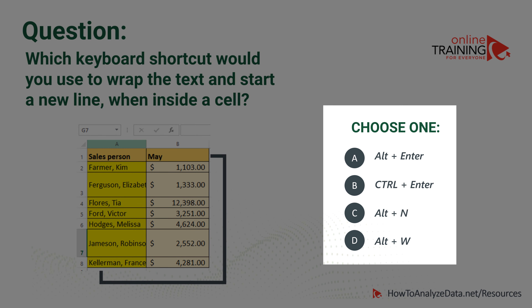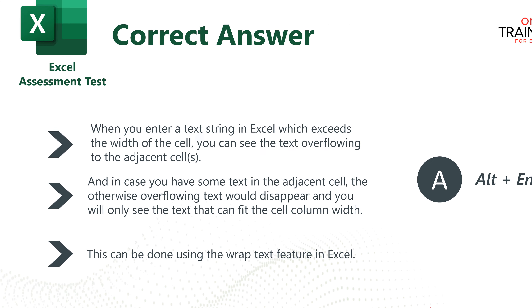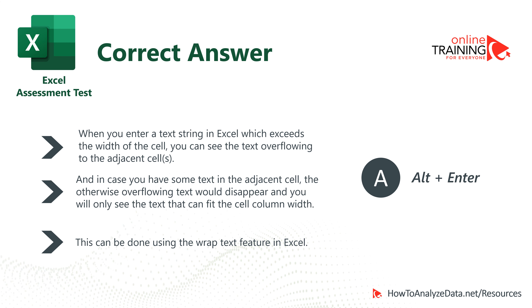When you are inside the cell and you need to continue the text on a new line, you use the Alt-Enter shortcut. When I press Alt-Enter, you see that the first name following the last name starts on a new line. So the correct answer to this question is choice A, Alt plus Enter. Very similar functionality can be accomplished using the Wrap Text feature of Microsoft Excel.